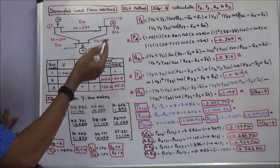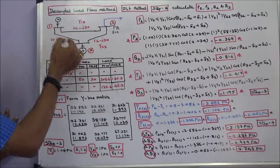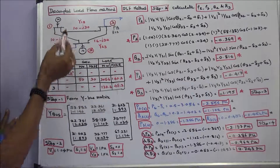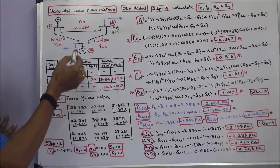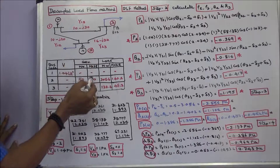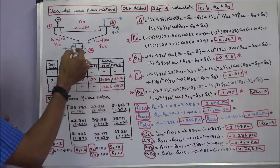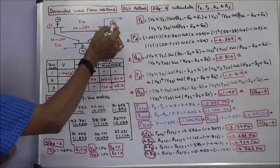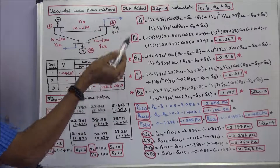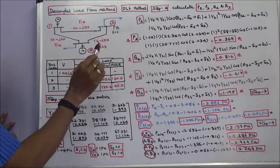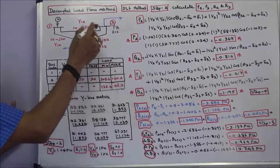We will work out a problem using the B-capital load flow method. The given power system network consists of two generator buses and one load bus. Bus 1 is a slack bus with voltage 1.04 at 0 degrees. Bus 2 is a generator bus with real power generation of 50 megawatts, reactive power generation of 30 MVAR, and load of 305.6 megawatts and 140.2 MVAR. Bus 3 is a load bus (PQ bus) with load of 138.6 megawatts and 45.2 MVAR. We need to calculate the first iteration values of V2, delta 2, V3, and delta 3. Nine series admittances are given.